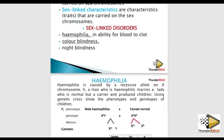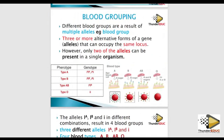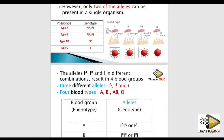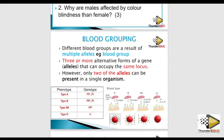Different blood groups result from multiple alleles. There are three alleles — alternative forms of a gene — occupying the same locus. However, only two alleles can be present in a single organism. So the three alleles are: allele for A, allele for B, and allele for O.